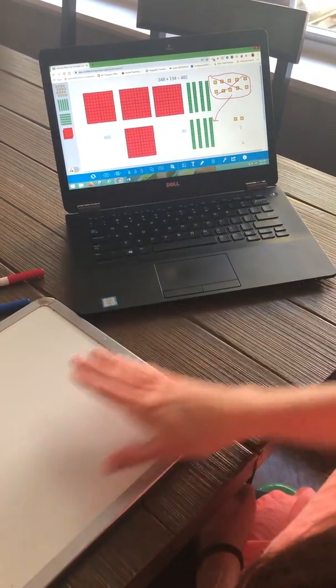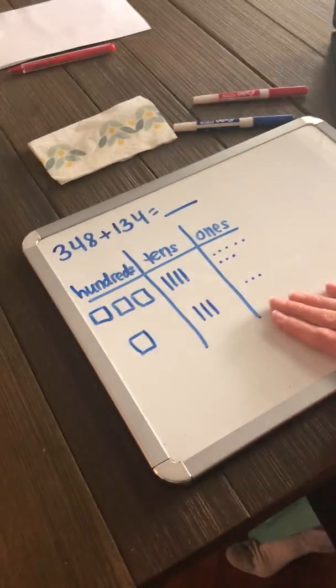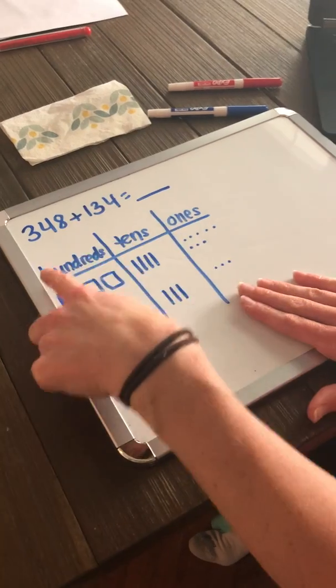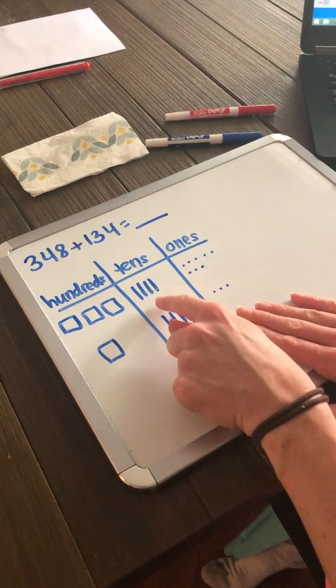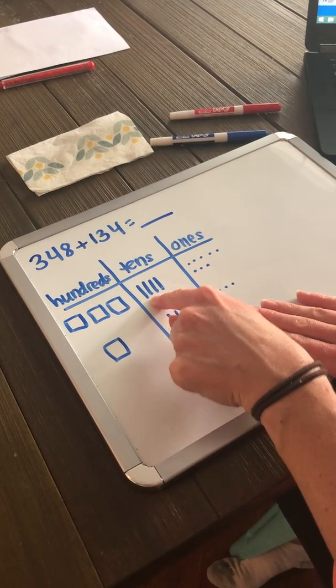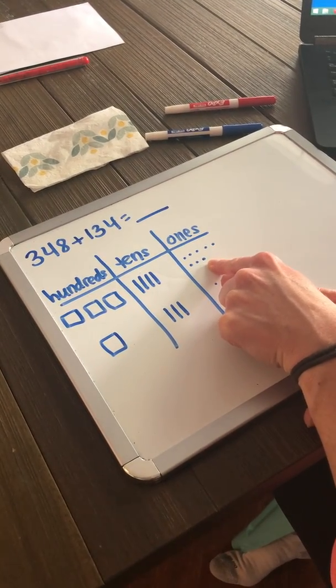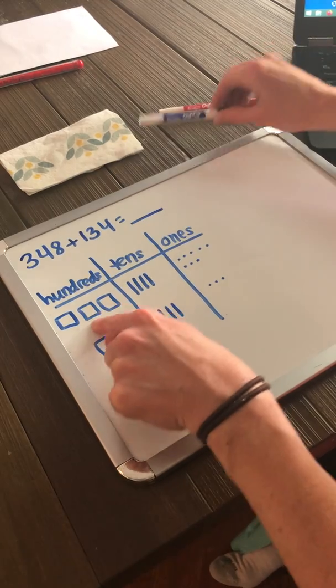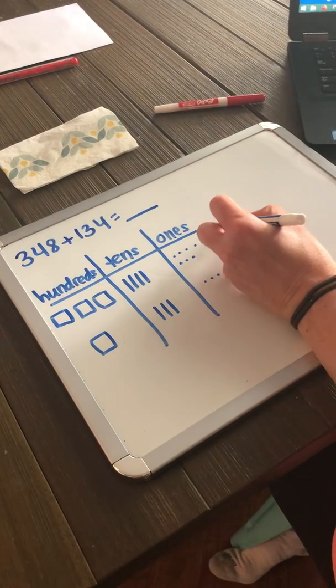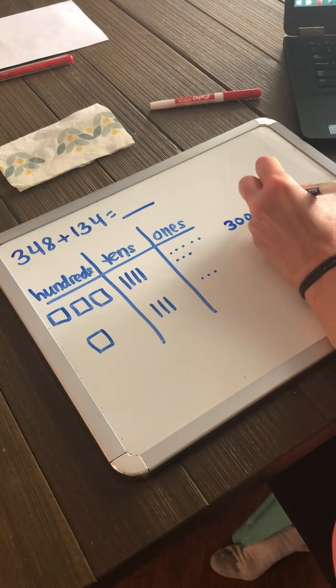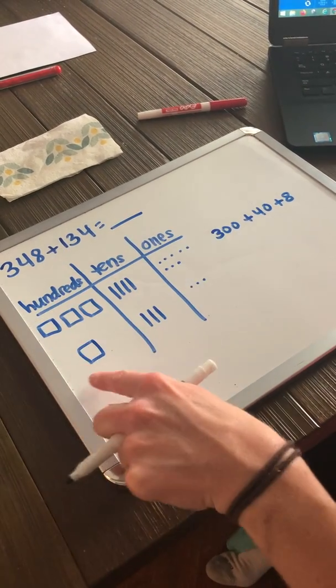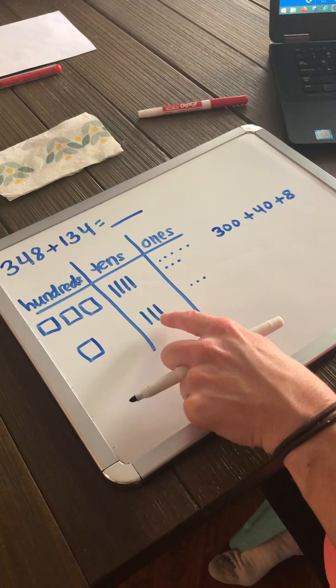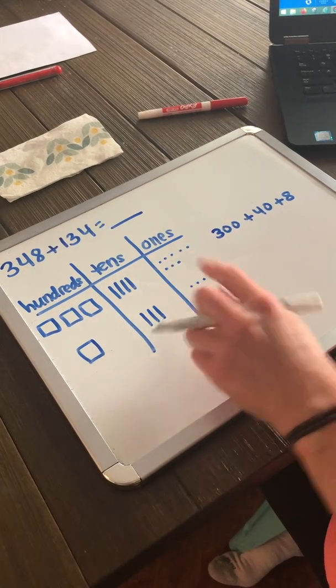So let's look and see what this looks like with drawings. Yesterday, we organized our drawings with our 100s, 10s, and 1s chart. We'll do the same thing here. I made sticks to represent my 10s because those are pretty quick. And I made dots to represent my 1s. So I showed 348. And then I represented 134. So I have 134.